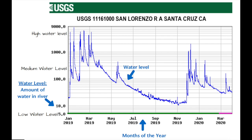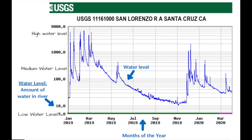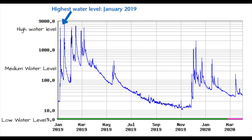Let's get to know a hydrograph by answering two questions. First question: What month is the water level the highest in the San Lorenzo River? Use the hydrograph to answer that question. Pause the video if you want, and then come back when you have your answer. So I noticed that the water level is the highest in January 2019 — you can see in the upper left-hand corner of the hydrograph that the water level was almost close to 9,000 cubic feet per second.